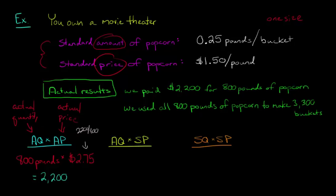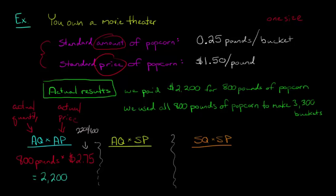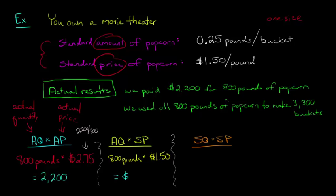Now the middle column is actual quantity times standard price. The actual quantity is still 800 pounds, but now we multiply it by the standard price of $1.50 per pound — that's the standard we established for what we should be paying for popcorn. So 800 times $1.50 gives us $1,200 in this middle column.